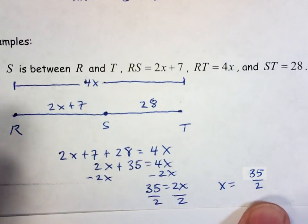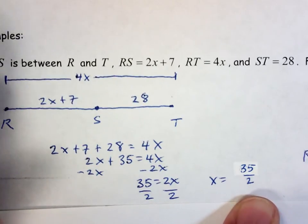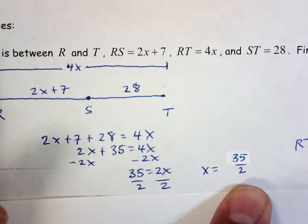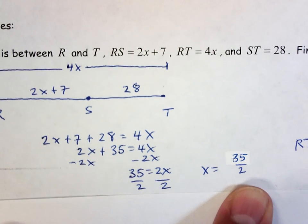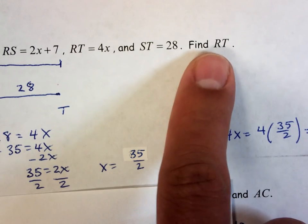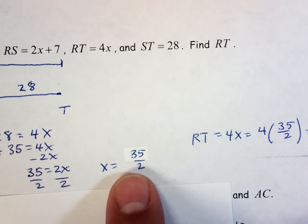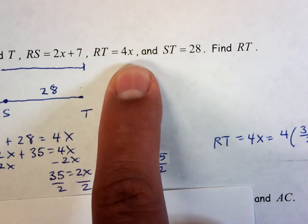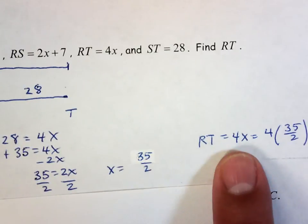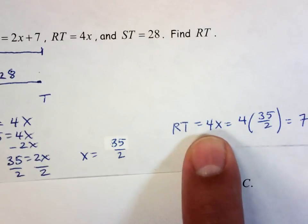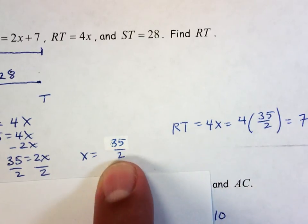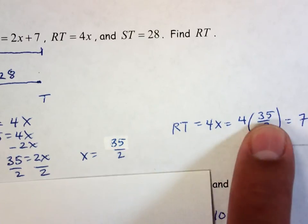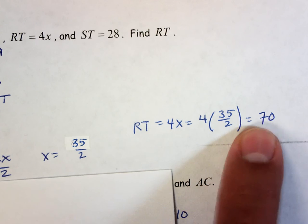If you stop here, which a lot of us are tempted to do. We solve for x. We must be done. That's not going to be good enough. It didn't just say solve for x. It said find RT. But I know what x is now. And I know from this that RT is equal to 4 times x. But I know what x is now. It's 35 over 2. So 4 times 35 over 2. RT is equal to 70.